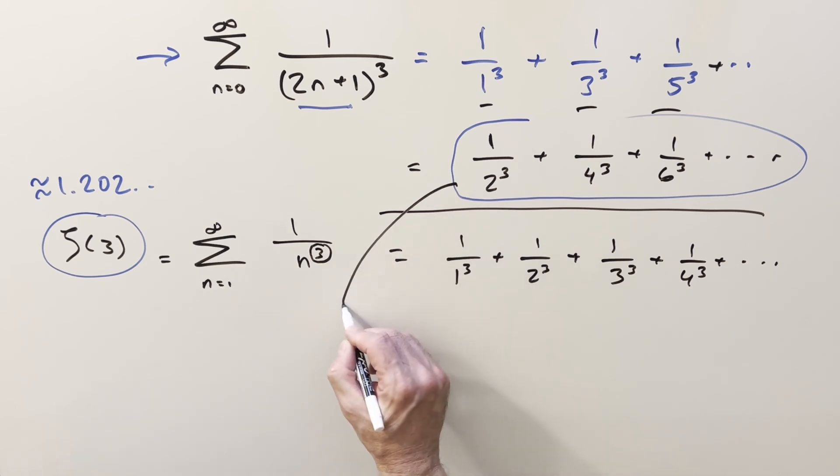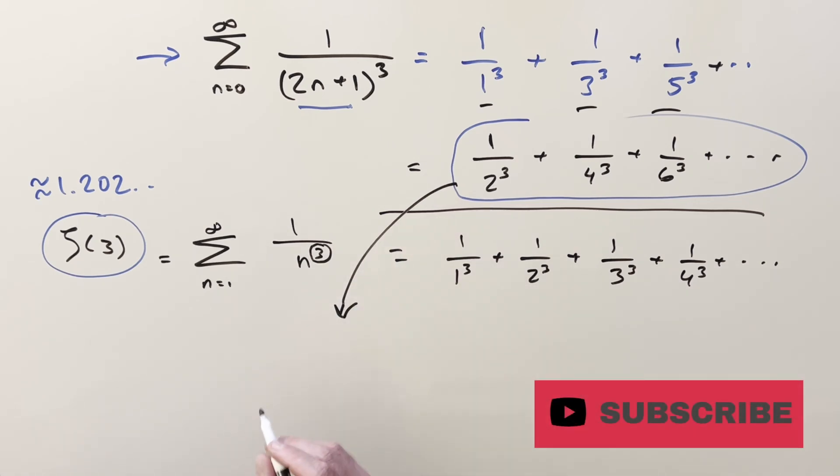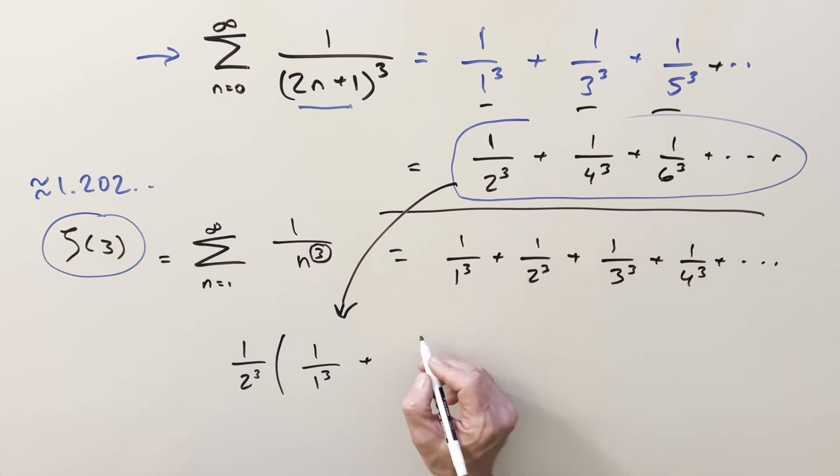If I take all the even terms, I want to factor out 1/2³. Doing that, the first term becomes 1/1³, and the second term becomes 1/2³.